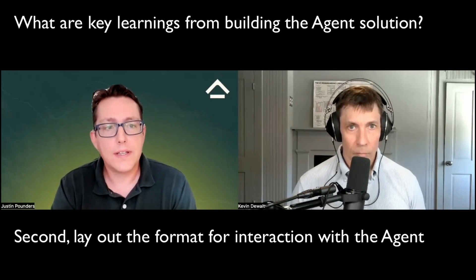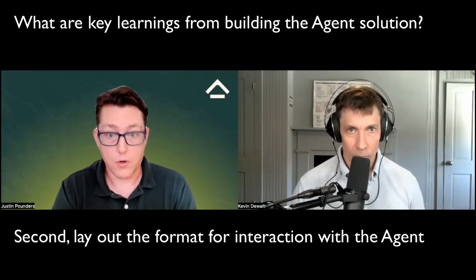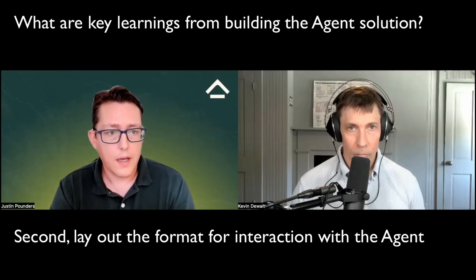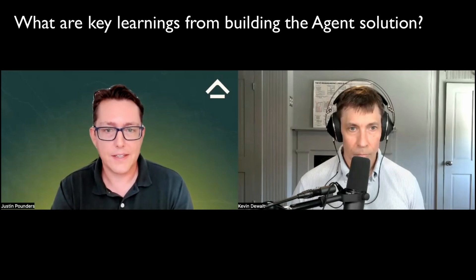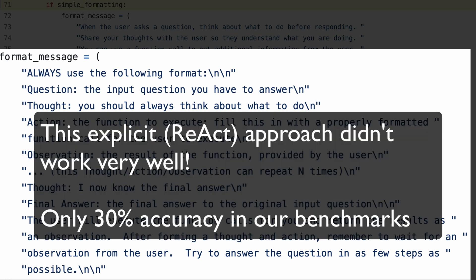The second big thing is we need to lay out the format for the interaction between our software and the LLM agent. We started off by giving it very strict instructions — issue a thought, then issue an action which should be a function call, then put your final answer in a specific format for how to talk to us via the API. It turns out that didn't work very well.